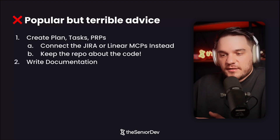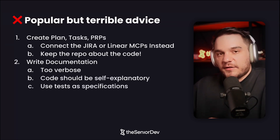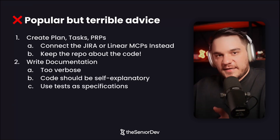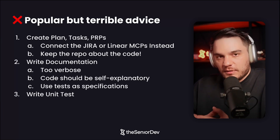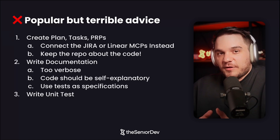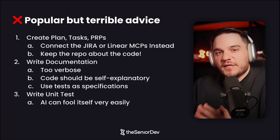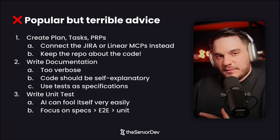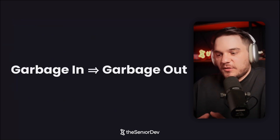The next bad advice is that you should write documentation. It makes the repo too verbose — code should be self-explanatory, and you can use your tests as documentation. When you write your unit tests and I read that file, I should already know what the function is supposed to do. The next bad advice is to only write unit tests to maintain quality over the code base. In reality, AI is very good at generating a unit test for everything — you can write the dumbest function ever and AI will give you a great-looking test. What you want is to combine unit tests with end-to-end tests where you look at the specs and write behavioral tests. These three things — plans, docs, unit-tests-only — will actually create very bloated code bases. Put garbage in, you'll get garbage out.